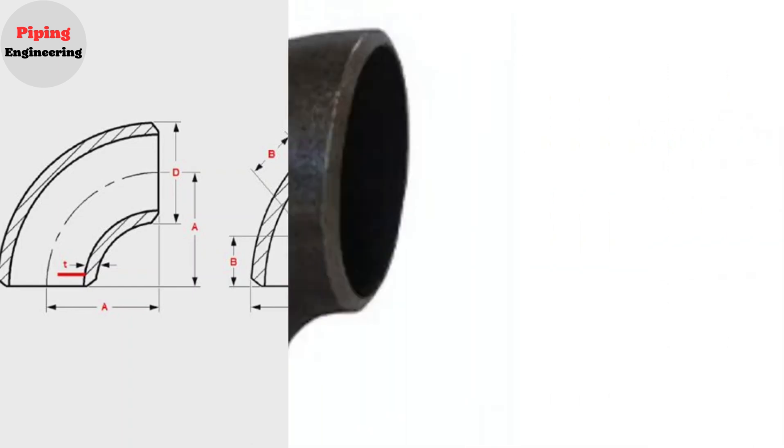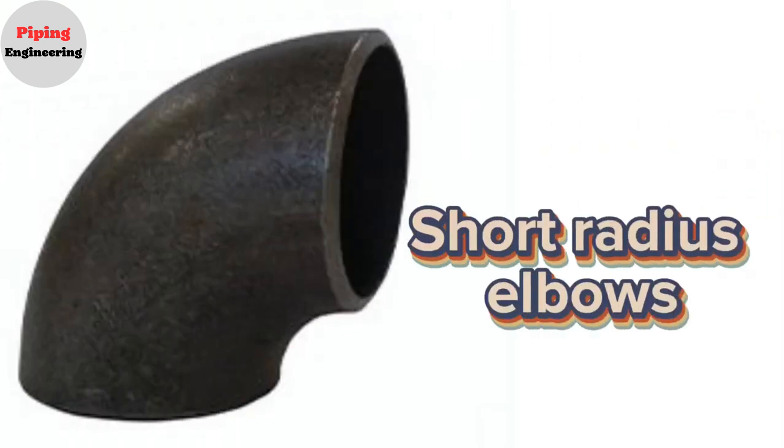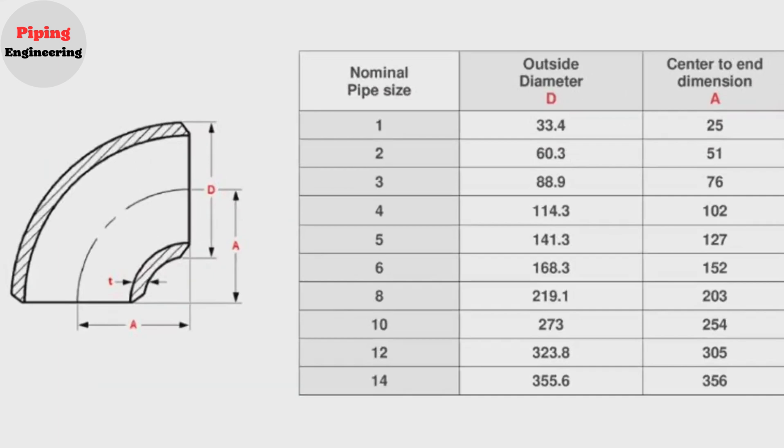Let's look at the dimensions of short radius elbows. Here is the same as in the size table of long radius elbows. Nominal pipe size is the same. Outside diameter is the same. Center to end dimension is different.